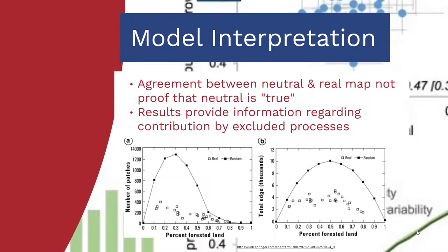When working with neutral models, agreement between the neutral and the real model is really not the goal — there's no necessary truth occurring. These are really good for a first fundamental pilot study or understanding of your region, and trying to model what you expect to see. The real model most often will not reflect what the neutral model reports, but you're looking for results that can provide information regarding the contribution of composition and configuration to particular ecological processes.